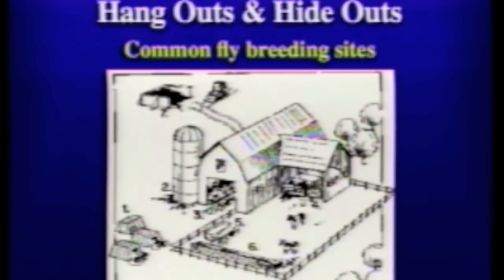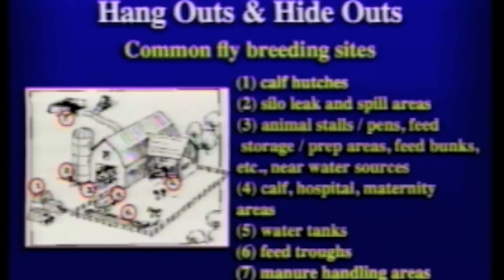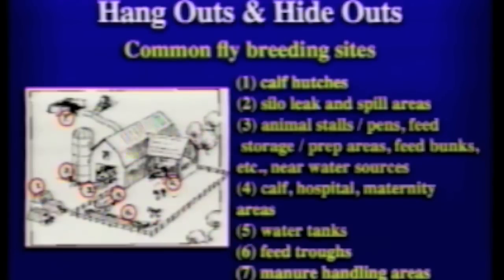When we look at where we're going to find these flies — we call these hangouts and hideouts — we're looking at a number of common fly breeding sites. The common fly breeding sites you definitely need to look at on the farm are the calf hutches, which generally produce large numbers of flies. Silo leaks and spill areas are number two. Animal stalls and pens, feed storage areas, prep areas, and feed bunks all need to be checked. The calf hospital areas, maternity areas, water troughs, feed troughs, and manure handling areas also need attention. But if you only had time to check a couple of places and wanted to do as good a job as possible, the calf hutches are certainly where I would definitely recommend you start looking.